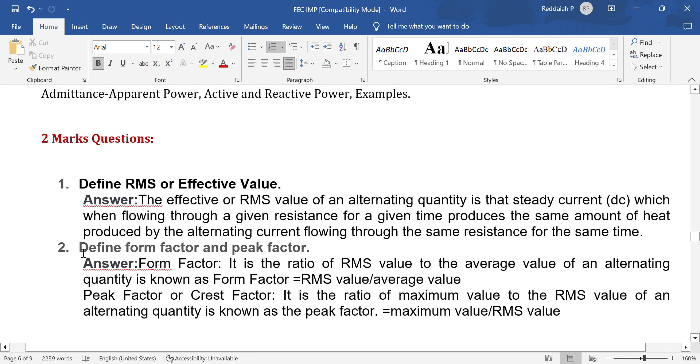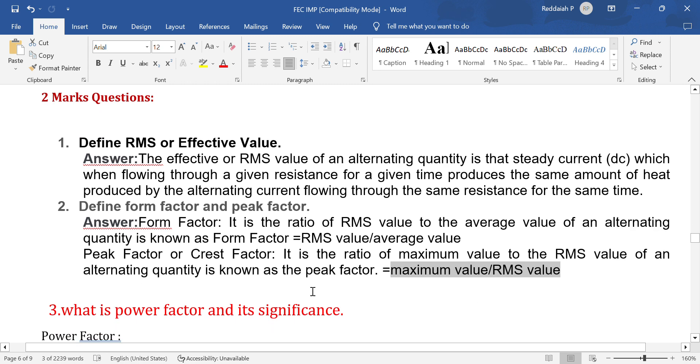Second question: Define form factor and peak factor. Form factor is the ratio of RMS value to average value. Peak factor is the ratio of maximum value to RMS value. What is the value of form factor for sinusoidal voltage? 1.11.